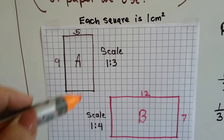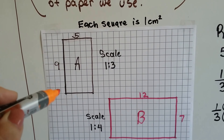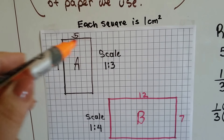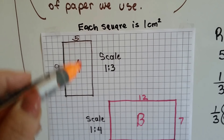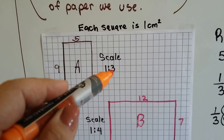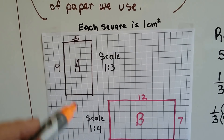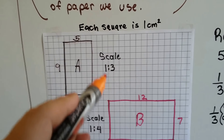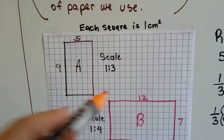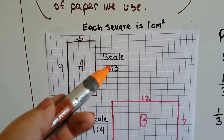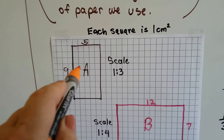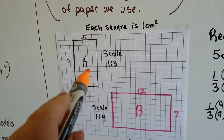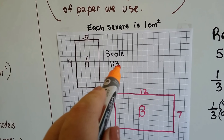We have Rectangle A here. It's nine squares — or nine centimeters — this way, and five squares — or five centimeters — this way. The scale is one to three. Because it doesn't say one what to three what, we figure that it's centimeters. So the scale is one to three — what would it be in actual size?